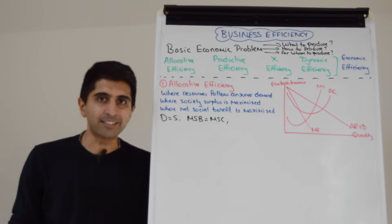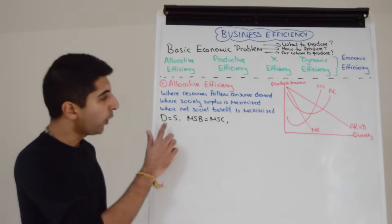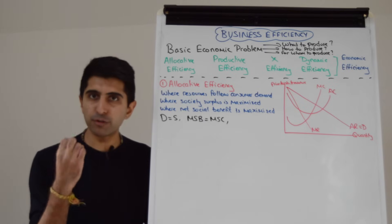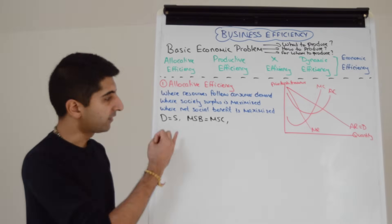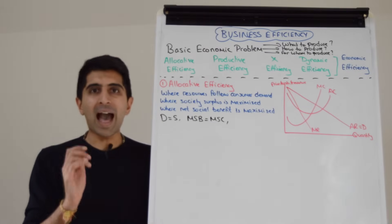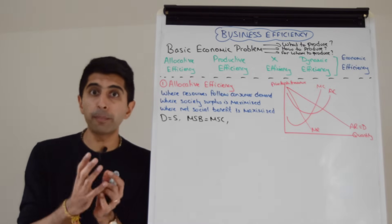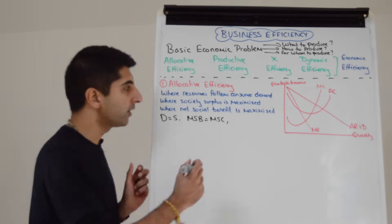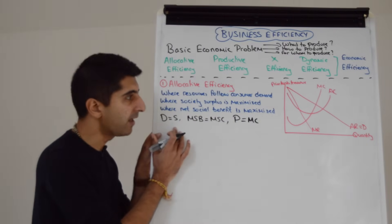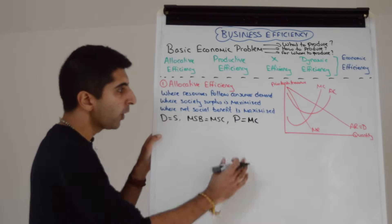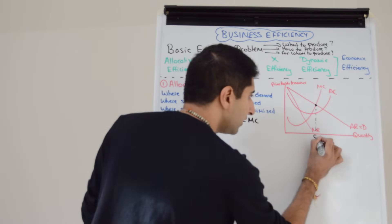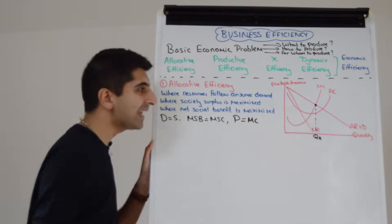But in a business sense, can we apply the same concept? Yes, we can. Where is demand equals supply on a business diagram? The demand curve is the average revenue curve, which is also the price. The supply curve is the marginal cost curve. So on a business diagram, allocative efficiency occurs where average revenue, or price, equals marginal cost — P equals MC. If we put that on a diagram, where price AR equals MC, let's call that quantity QAE for allocative efficiency.